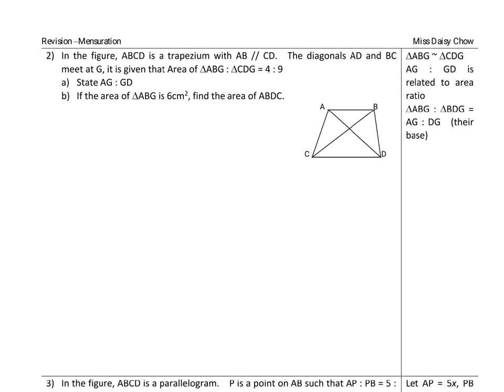Question 2: In the figure, ABCD is a trapezium with AB parallel to CD. The diagonals AD and BC meet at G, and it's given that the area of triangle ABG to triangle CDG is 4 to 9. So this one is 4, this one is 9.